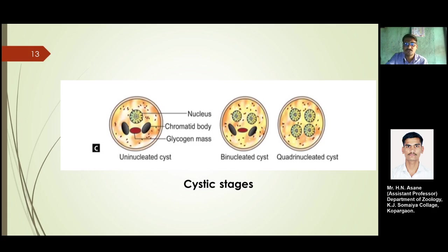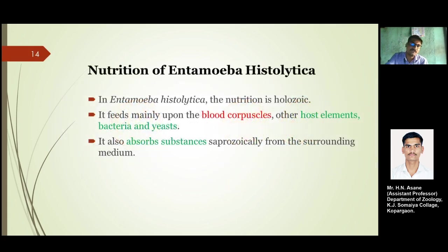The quadranucleated cyst is the mature structure of Entamoeba histolytica, ready to rupture and release four daughter cells into the environment by means of feces. We studied the nutrition of Entamoeba histolytica — what it feeds on. It feeds mainly on blood corpuscles and host elements like bacteria and yeast in the intestinal gut.